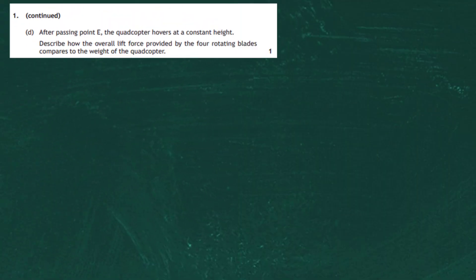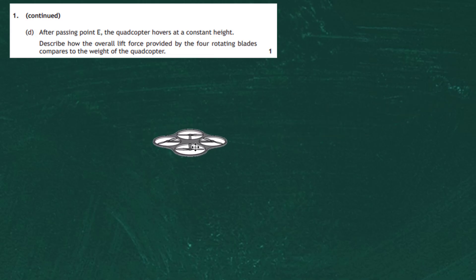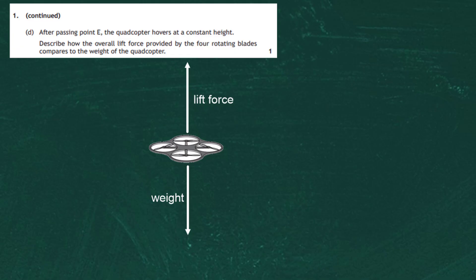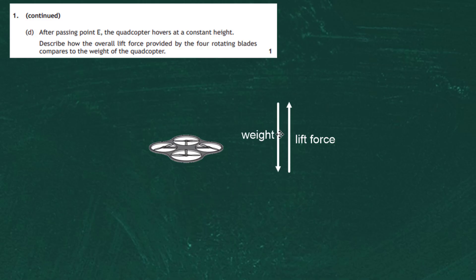Question 1, part d. After passing point E, the quadcopter hovers at a constant height. We need to describe how the overall lift force compares to the weight. Since the quadcopter is neither moving upwards nor downwards, it is not accelerating in either direction. The weight vector acts downward and is counteracted by the upward lift force vector. The size of the weight force is equal to the lift force, but they act in opposite directions.